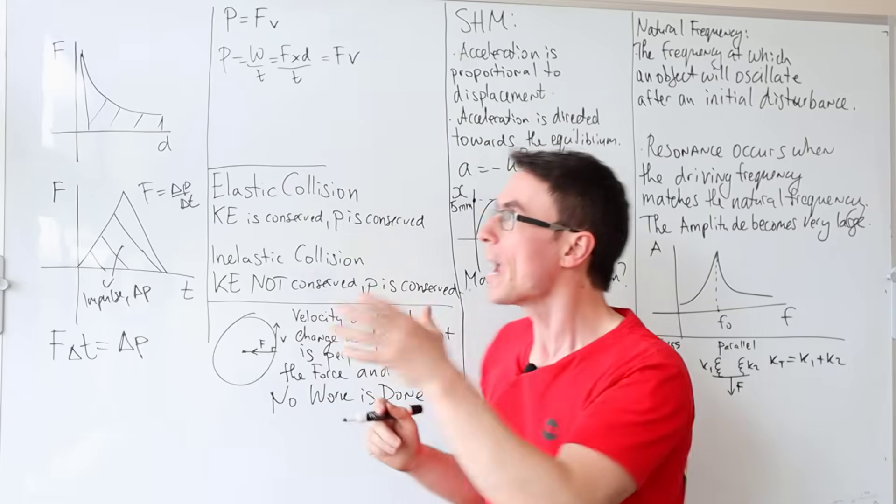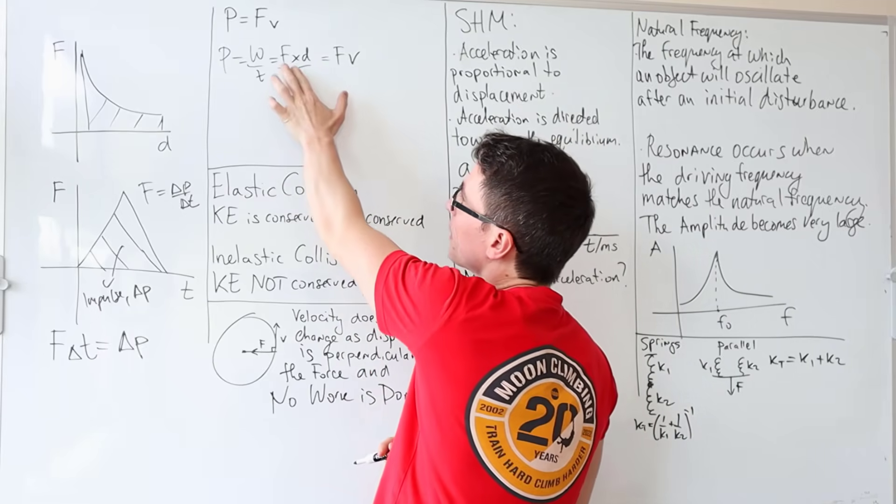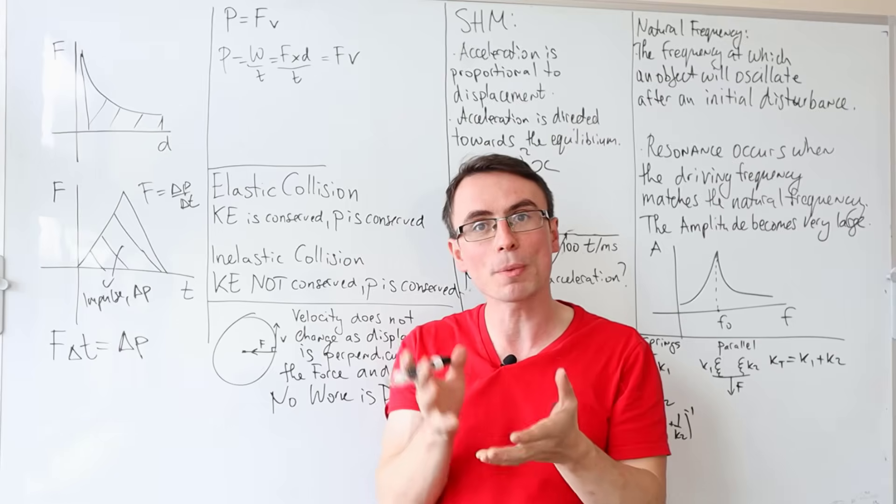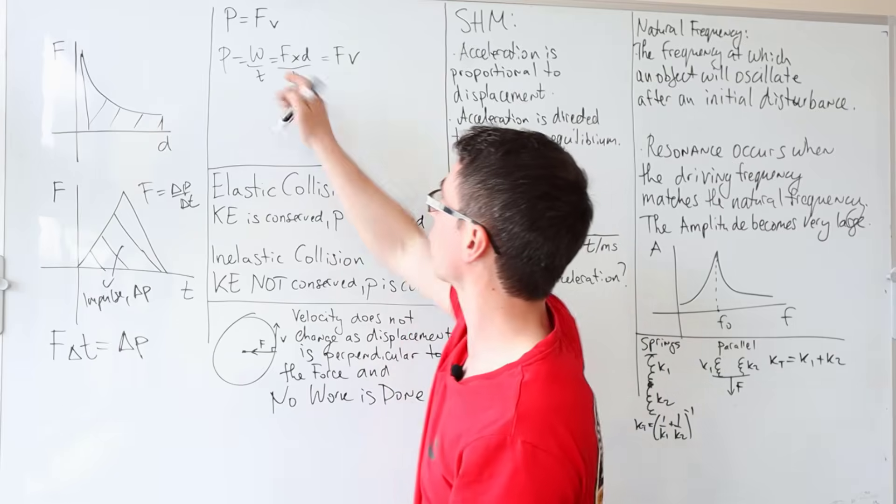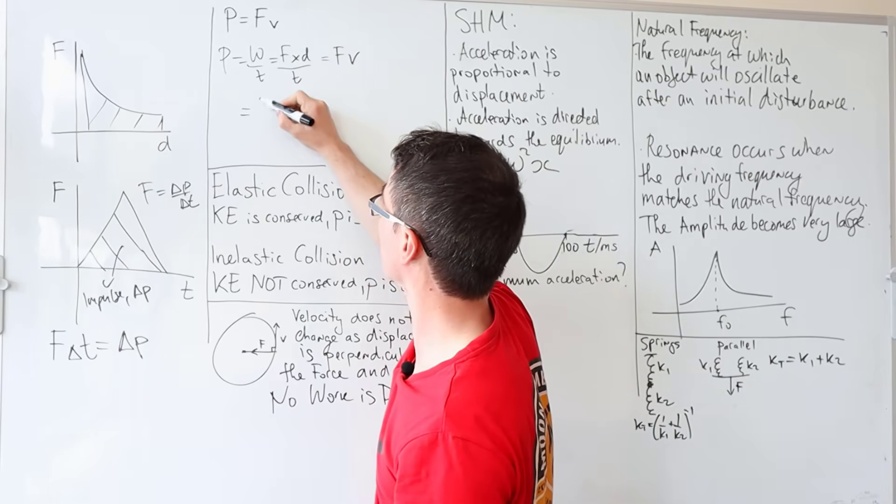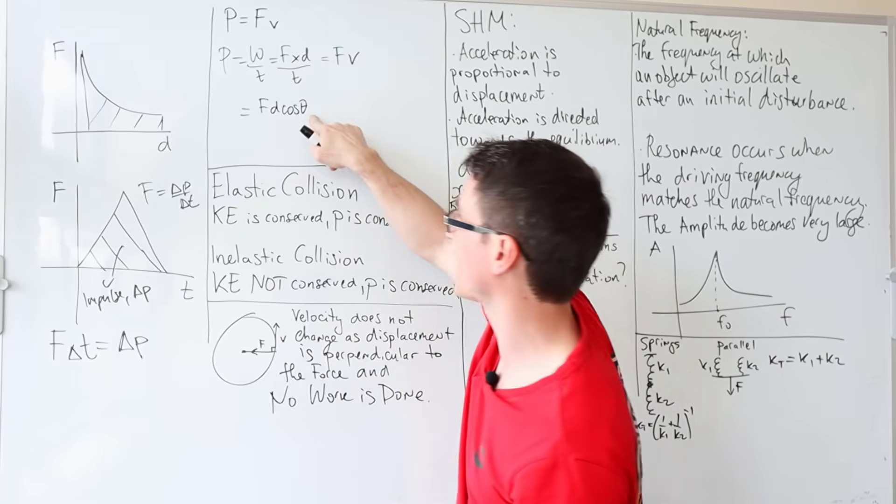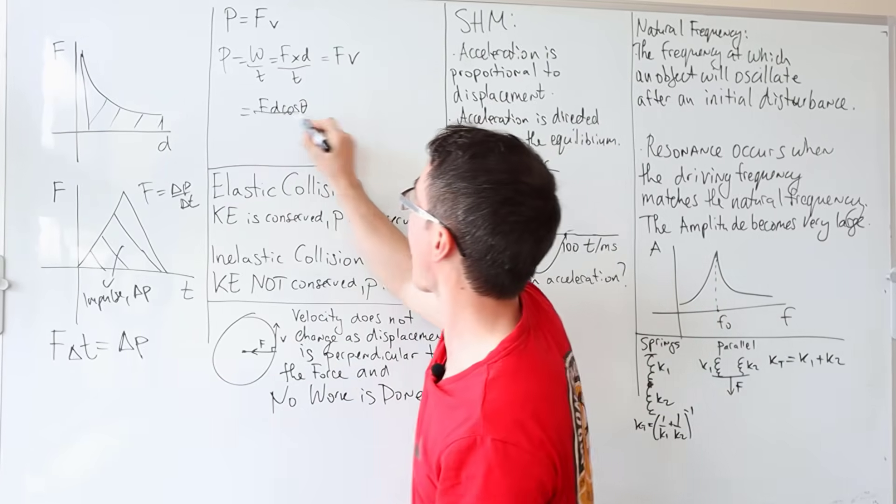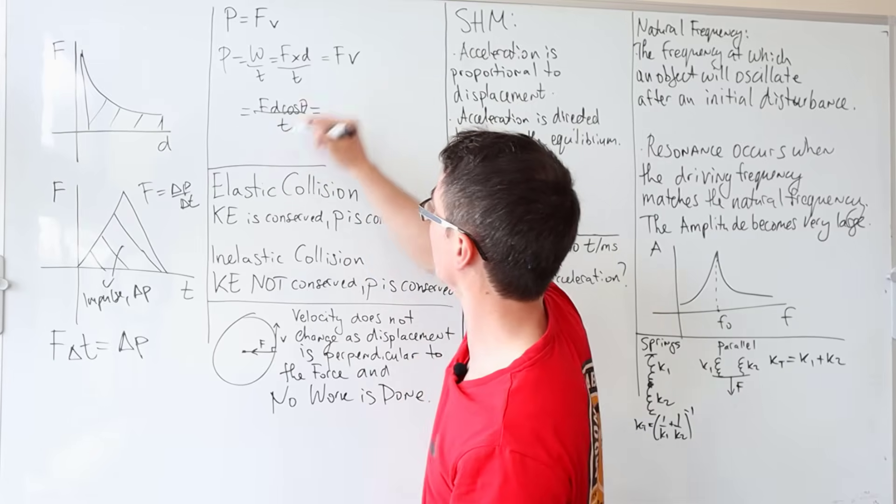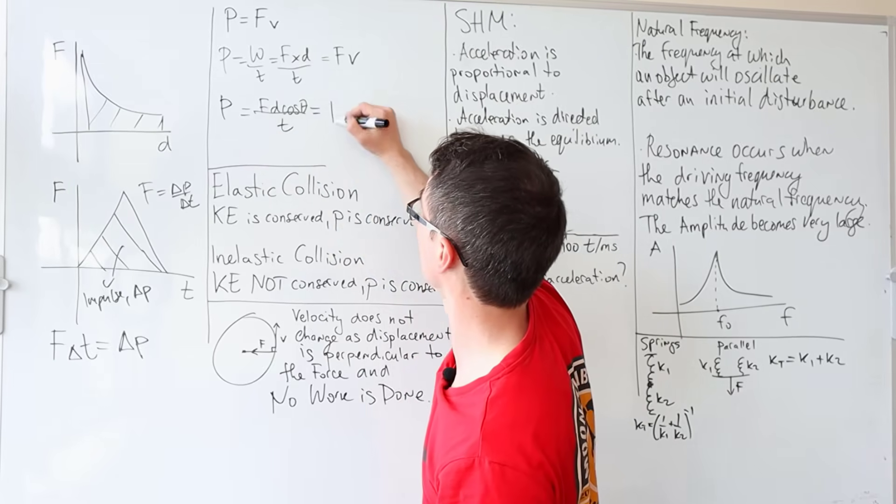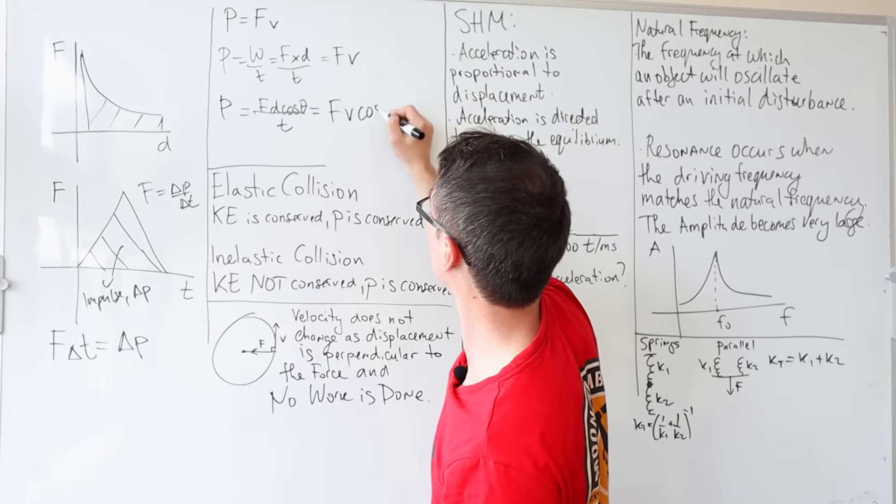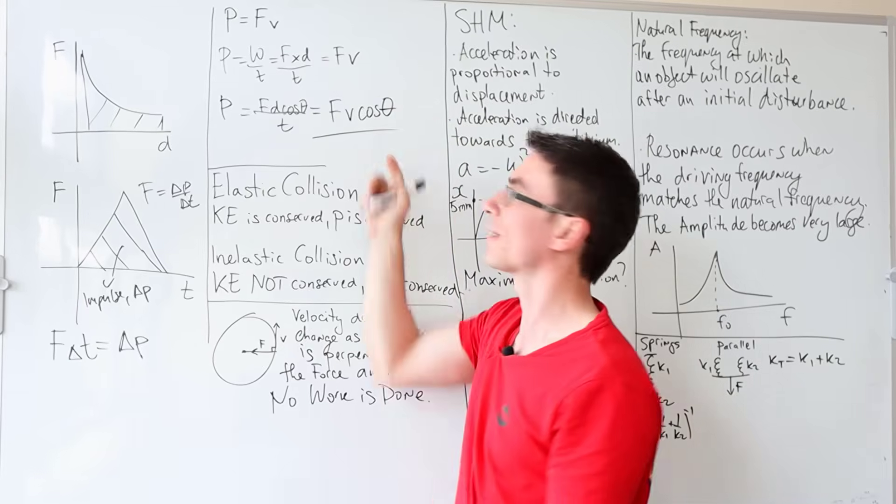There is a catch though. If the displacement and the force are not perpendicular to one another, the work done equation becomes FD cos θ. And if that's the case, the power equation actually becomes FV cos θ.